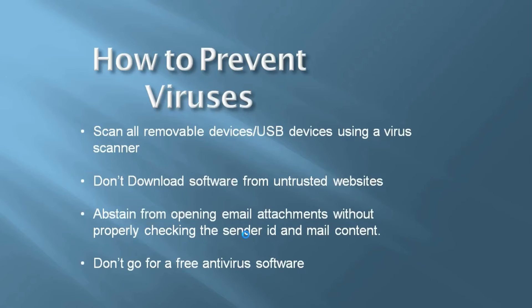How to prevent viruses. How can you prevent your system or smartphone from viruses? Scan all removable drive devices and USB devices using a virus scanner. Don't download software from untrusted websites. Abstain from opening email attachments without properly checking the sender ID and the mail content. Don't go for a free antivirus software.